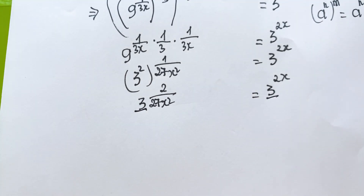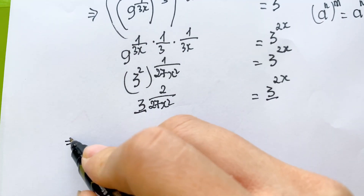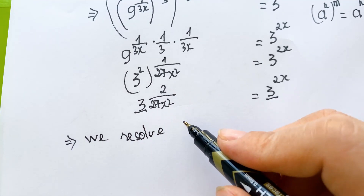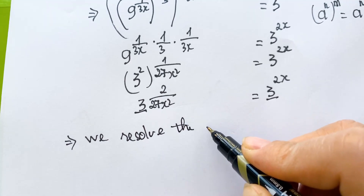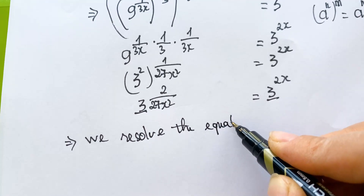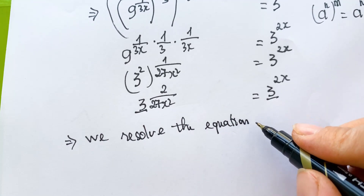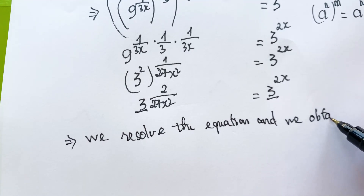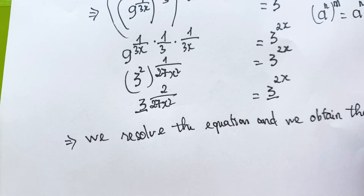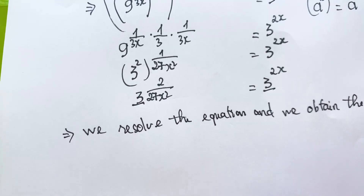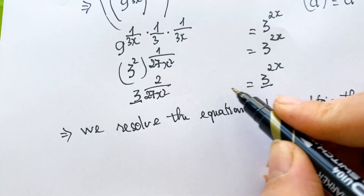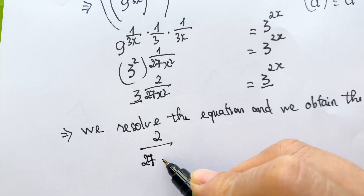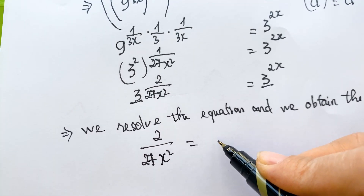Because it is the same base, therefore we can equate the equation and obtain the solution. The solution: because it's the same base, the powers must be equal, so two over twenty-seven x squared equals two x.